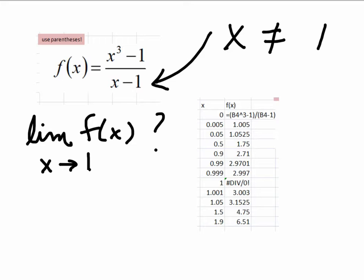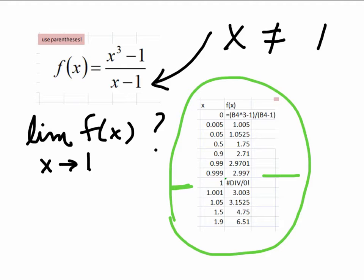But suppose we wanted to know the limit of f of x as x approaches 1. What I've done for you is I've just taken a snapshot of what I've done in Excel. I typed my function into Excel, my x values that you can see starting with 0, going closer and closer to 1, and then on the other side of 1, getting larger than 1, but in very small increments. You can see that at 0.999, the value of the function is 2.997. You can also see that the value at 1.001 on the other side of 1, larger than 1, is 3.003.